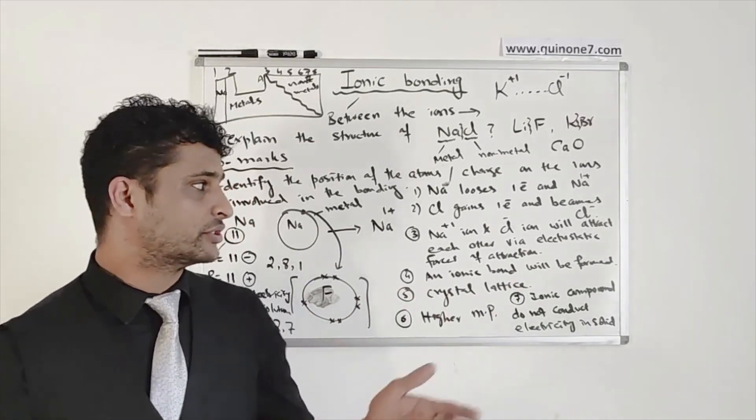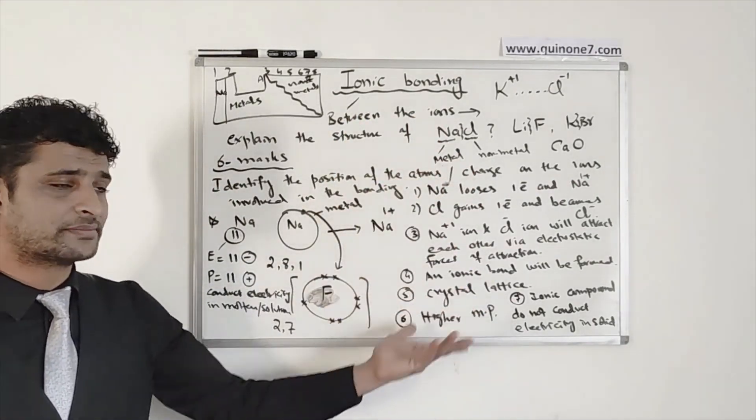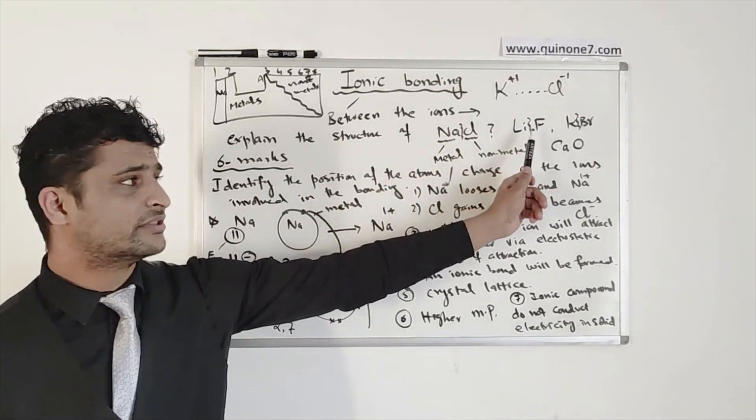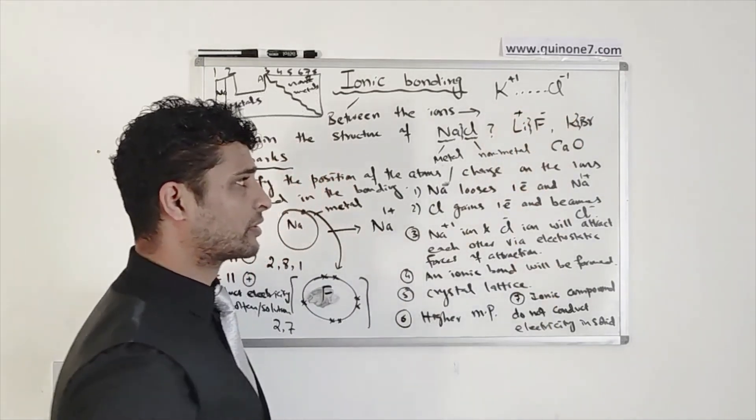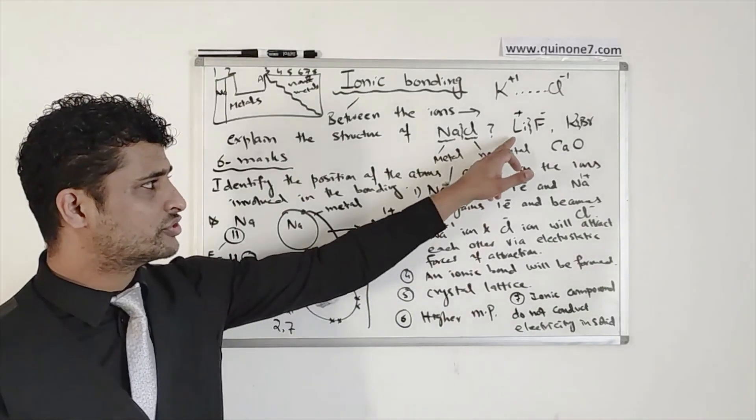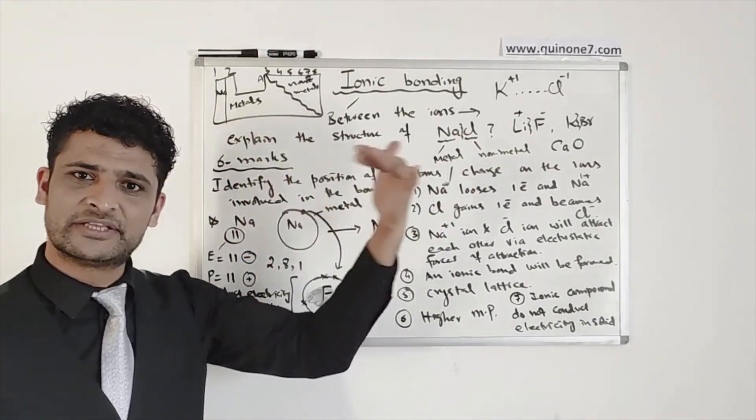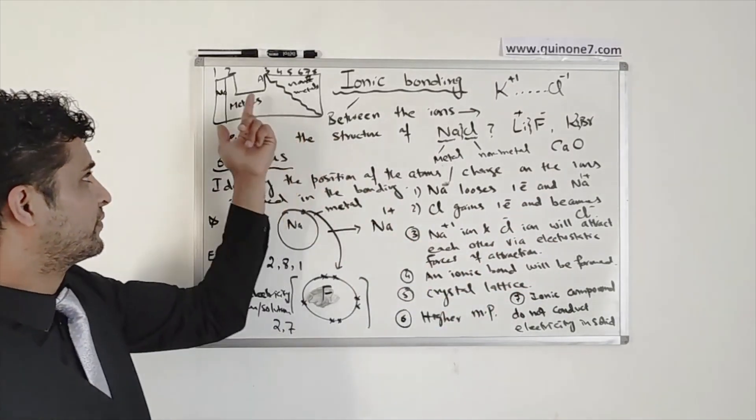So the ionic compounds are actually, you can take a screenshot and you can actually remember all these steps and you can get a mark. You can just change the position. You can say lithium fluoride. Lithium will lose one electron and become a Li positive ion. Fluoride will gain that electron because it will become negative ion. All you have to do is to locate the position of these atoms in the periodic table. And based on that, you can actually look at how many electrons they have lost.